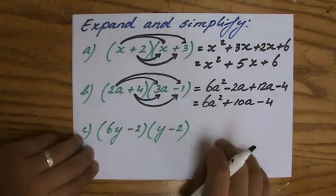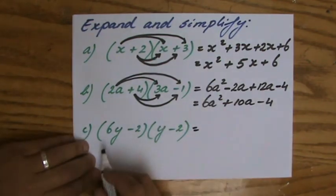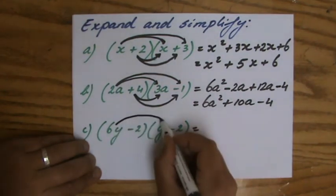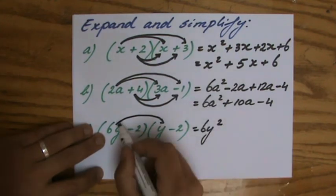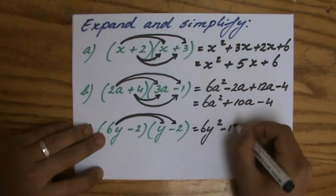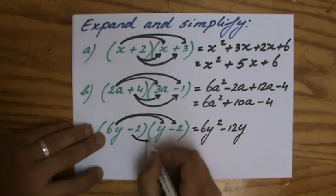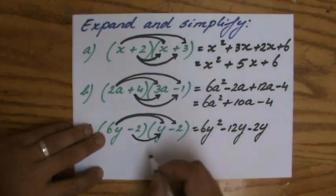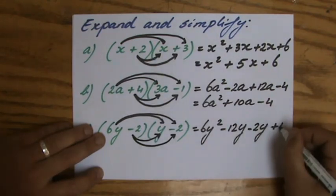Finally, 6y times y, so 6 times 1 if you like, gives 6y squared. 6y times minus 2 is minus 12y. Finished with that one. Moving on to the next one: minus 2 times y is minus 2y, and minus 2 times minus 2 is going to be a positive 4.